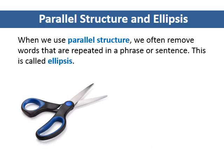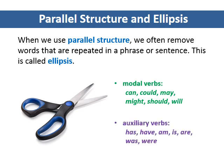When we use parallel structure, we often remove words that are repeated in a phrase or sentence. This is called ellipsis. We often use ellipsis with modal verbs, such as can, could, and should. We also use ellipsis with auxiliary verbs, especially when we use the present continuous, the past continuous, and the present perfect. Auxiliary verbs include forms of have and is.